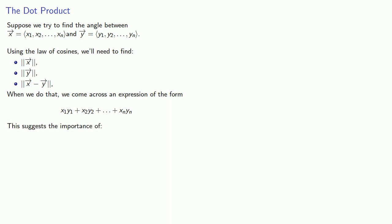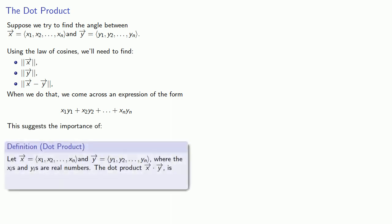And this suggests the importance of the following. Let x and y be vectors, where the xi's and yi's are real numbers. The dot product is given by this formula, and we can call it the sum of the component-wise products.